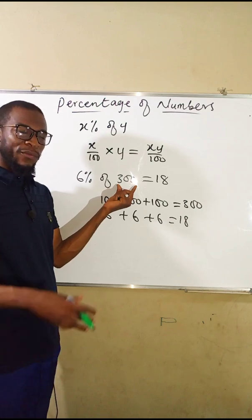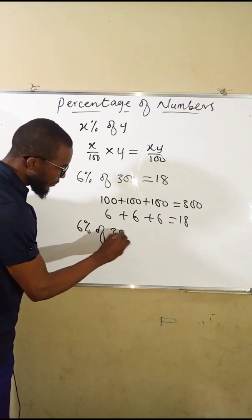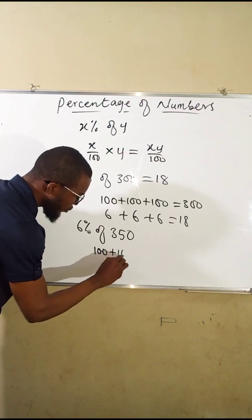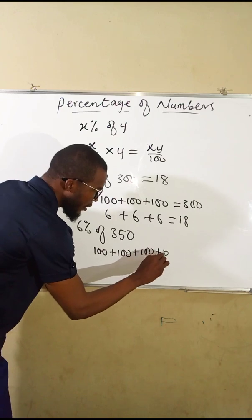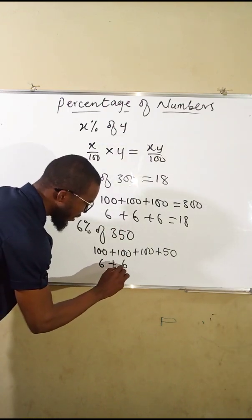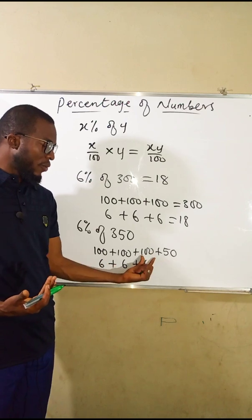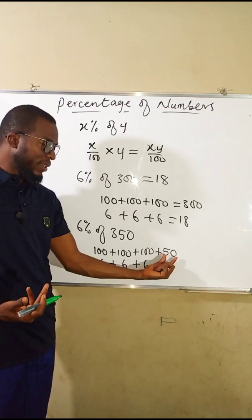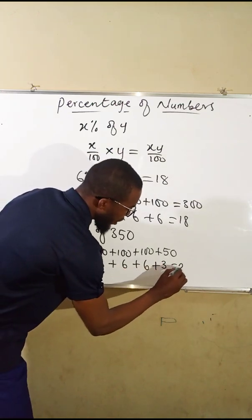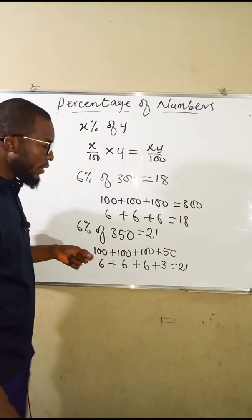What if this value is not exactly 300? For instance, 350. This can be written as 100 plus 100 plus 100 plus 50. Every hundred will contain six, so we have six, six, and six. But this last part is 50, which is half of 100. If 100 contains six, then 50 will contain 3. Adding all together we get 21, so 6 percent of 350 is equal to 21.